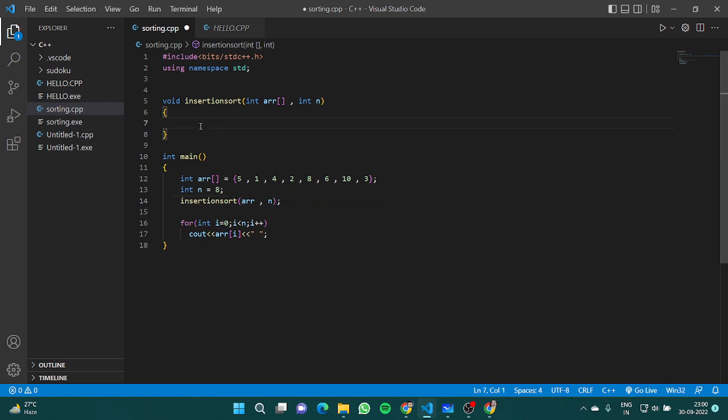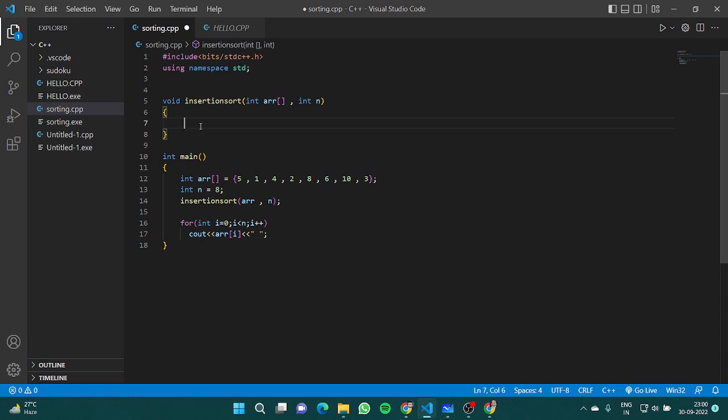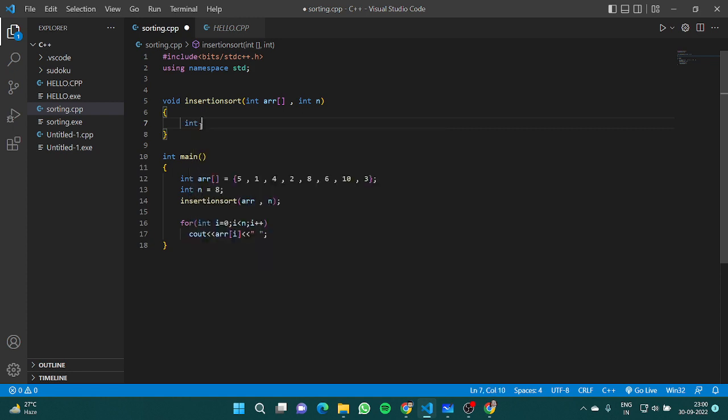We will start from here. Let's declare a few things: int i, int j, and we will see what is the use of key.